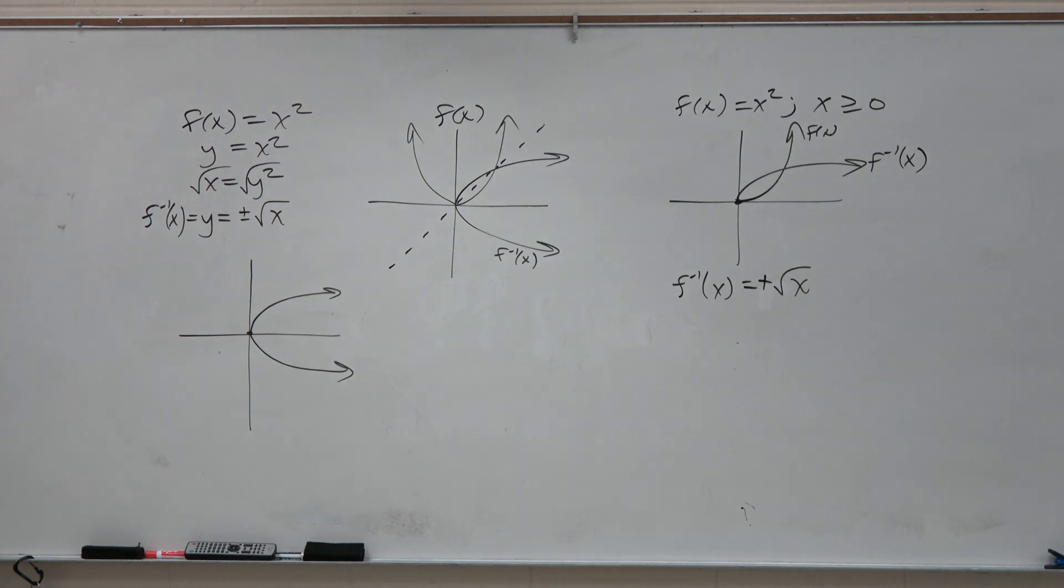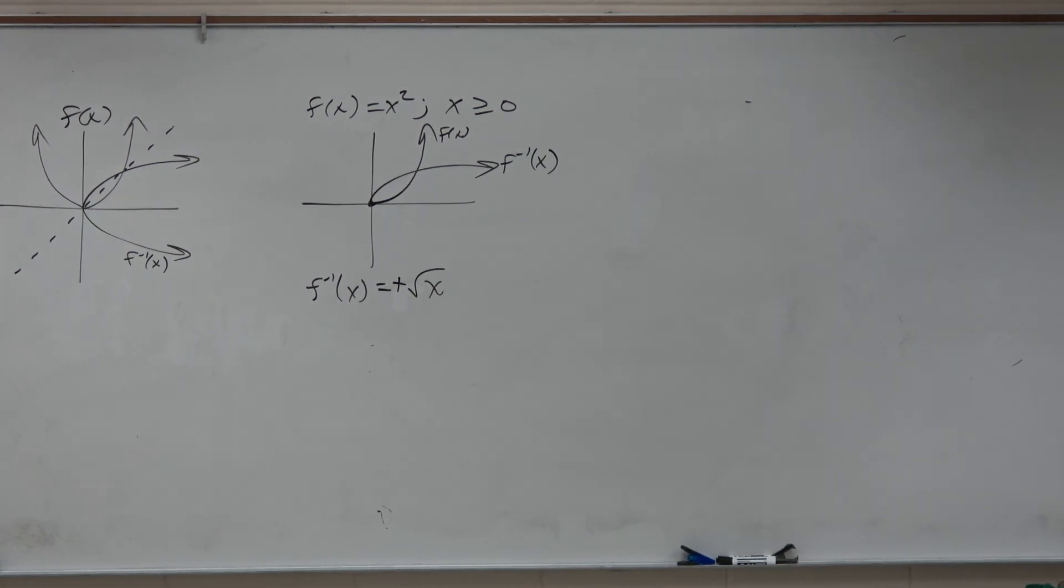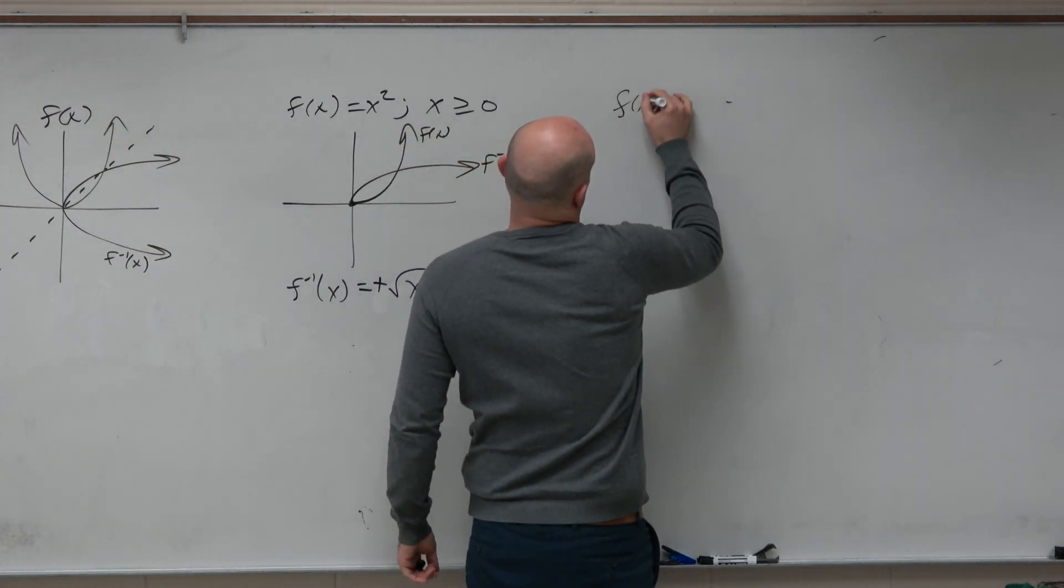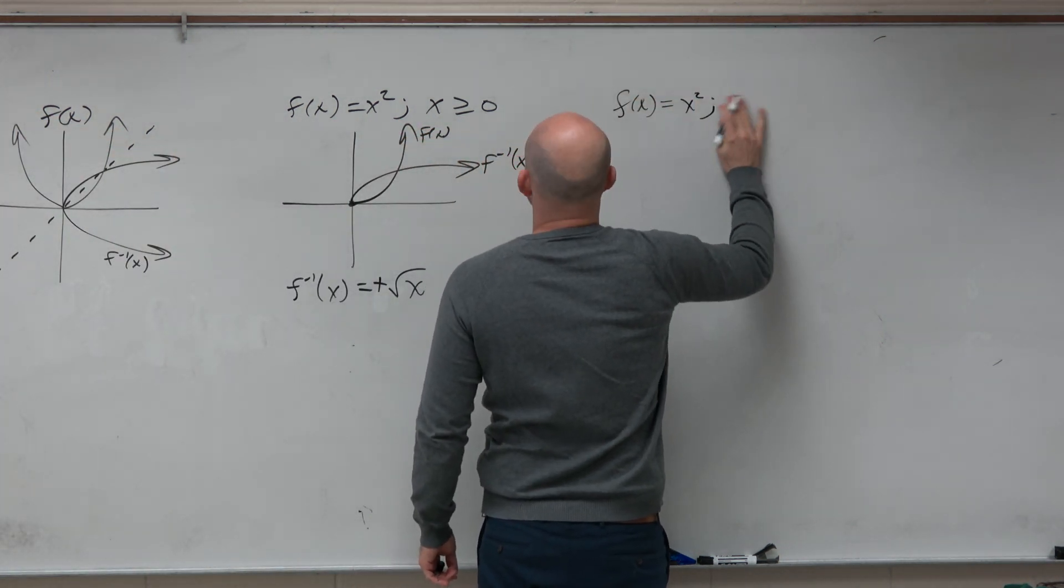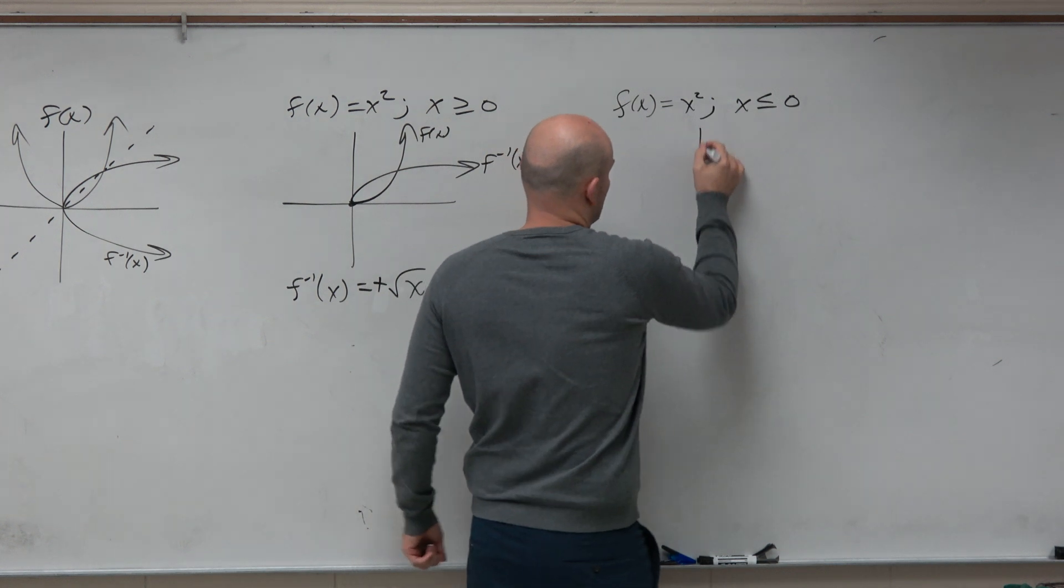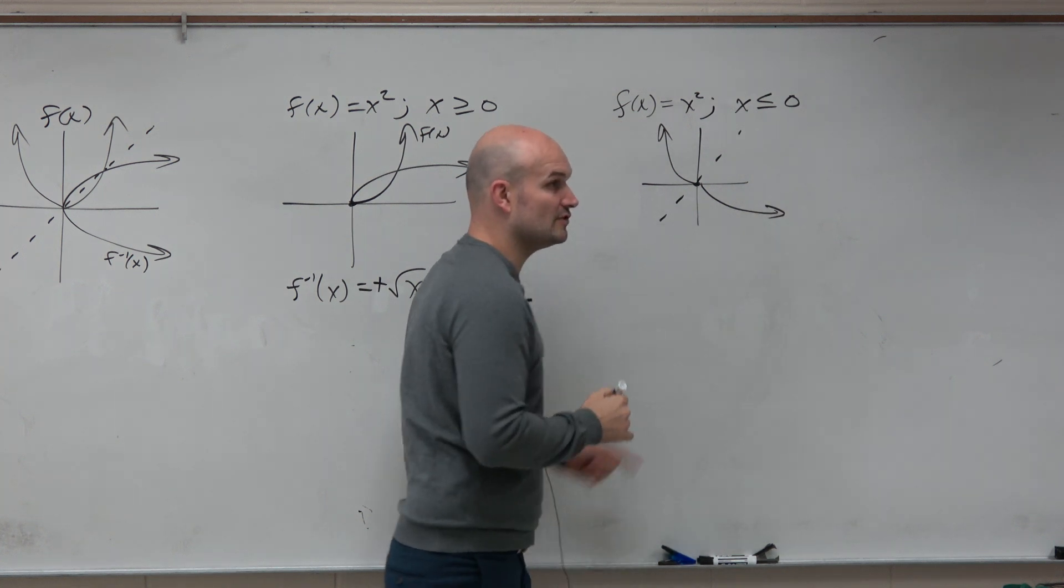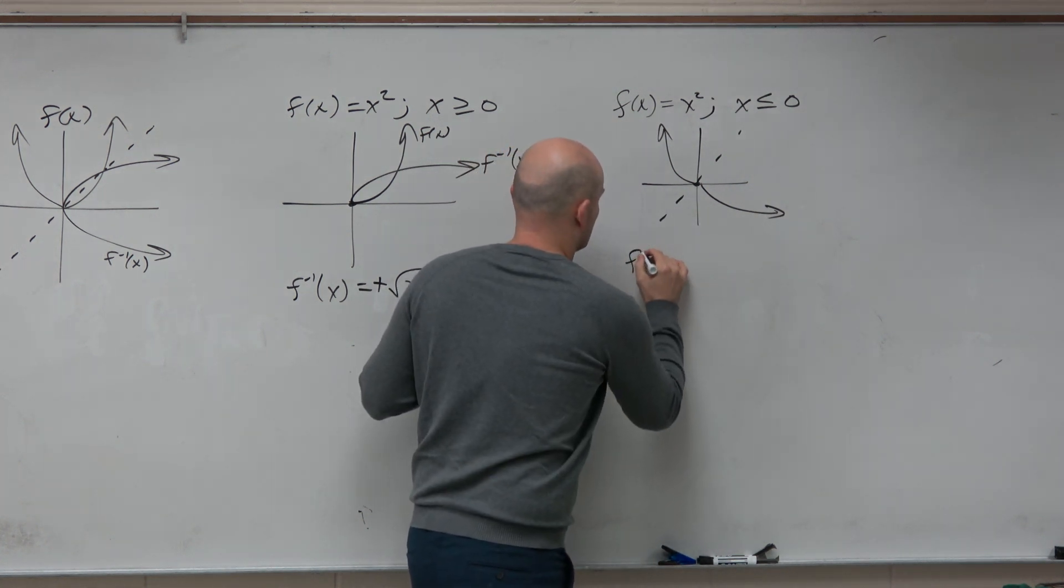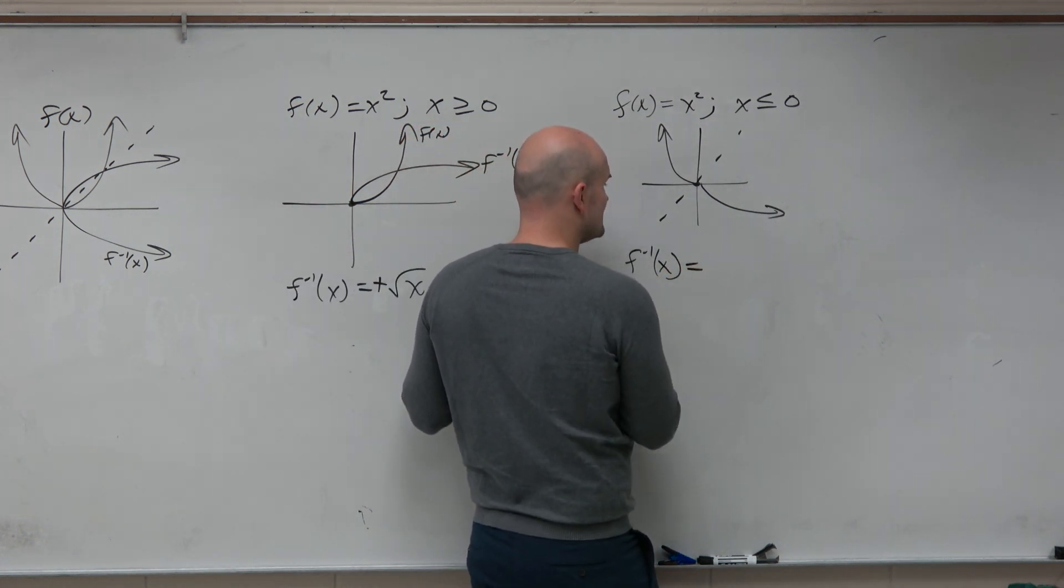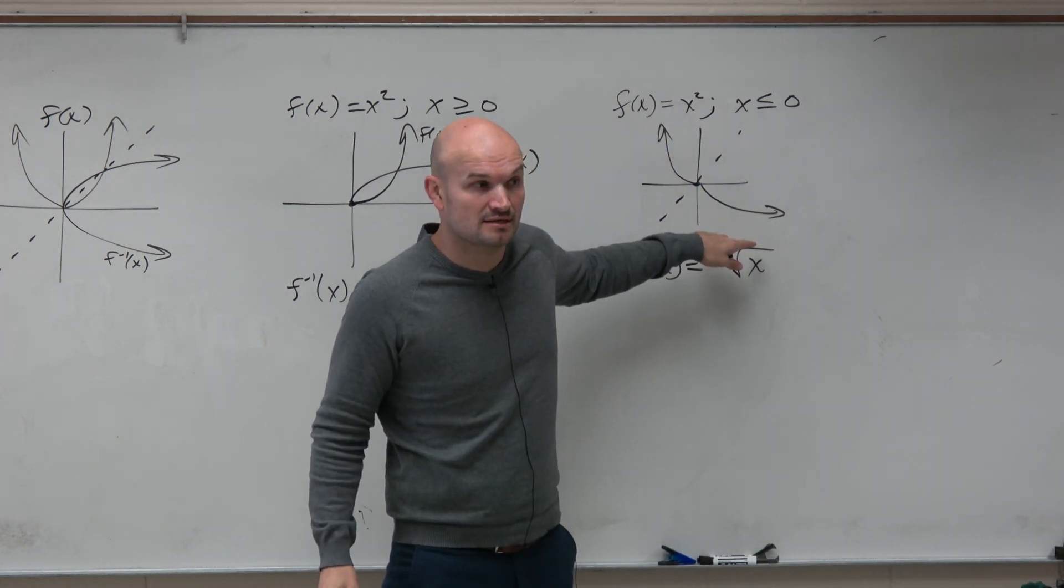But we could also do, we don't have to do positive versions of the restriction, guys. We could also do the negative restriction. So I could also say f of x equals x squared, such that x was less than or equal to 0. We could do that restriction, and that'd be the same idea. Now we're going to do to the left, reflect about the y equals x. You're going to have that negative version. And then the equation, f inverse of x is now going to be the negative version of x. So you can see that's the square root, but it's the negative version of that.